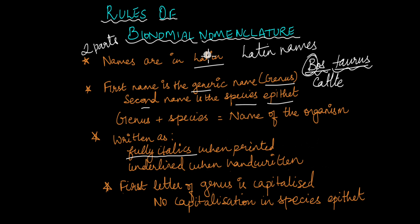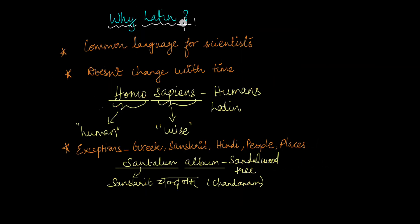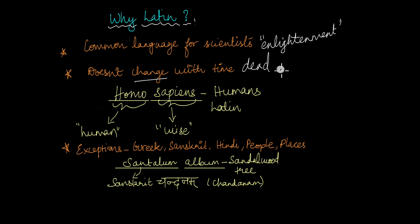Before we see examples of scientific names, let's look at why Latin is used in binomial nomenclature, even though it is a dead language and nobody speaks it anymore. In olden days, Latin was used because it was the common language for scientists, known as the language of enlightenment. It is still used today because Latin, being a dead language, does not evolve or change with time. Other languages have changed a lot over time, but because nobody speaks Latin anymore, a word in Latin that meant something 400–500 years back still means the same and will still mean the same 500 years into the future. That is why Latin and terms derived from Latin are still used in binomial nomenclature.